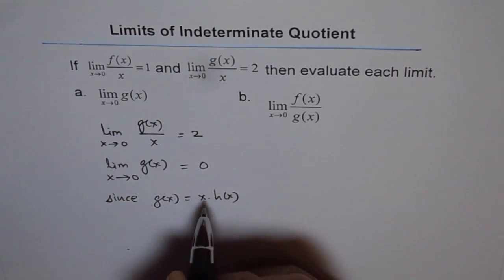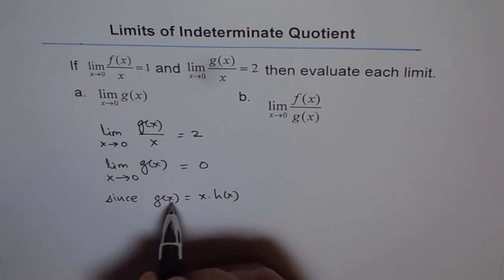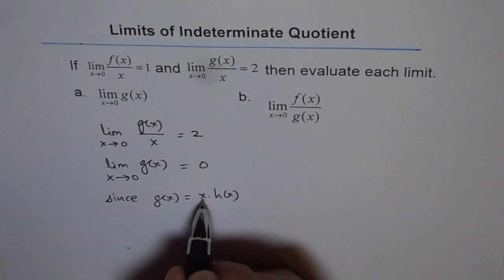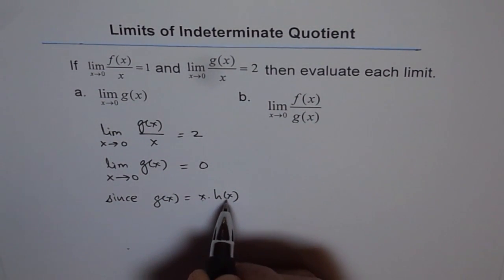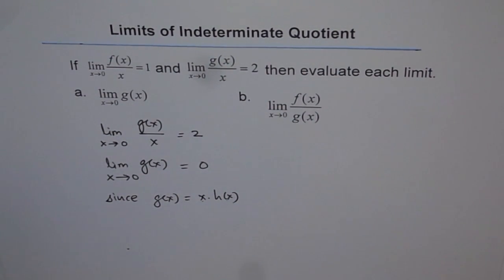That is why the limit of this function when x approaches 0 will be 0 times anything else, which is going to be 0. So that is the reason. And the answer for this is 0.